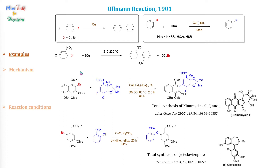The second example is the synthesis of an unsymmetrical biaryl in which the bromo-aryl was used in excess as 1.5 equivalents for 1 equivalent of the iodo aryl. This reaction was employed in the total synthesis of kinamycin, published in 2007.